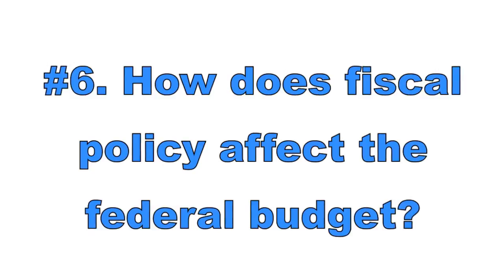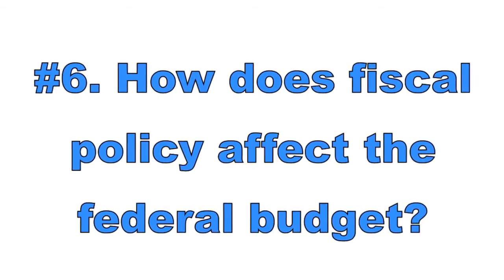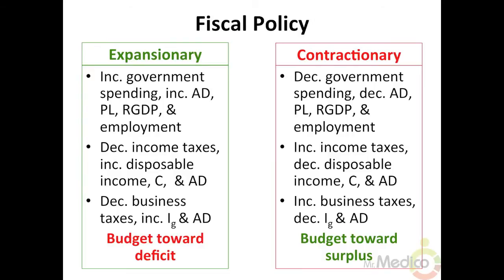Number six: how does fiscal policy affect the federal budget? Fiscal policy refers to government actions that attempt to shift aggregate demand toward the full employment level of output in the short run. In Keynesian theory, the two key tools are government spending and taxation. A budget deficit occurs when the government spends more than it receives in tax revenue, requiring it to borrow by issuing bonds — increasing the national debt and leading to the crowding-out effect.